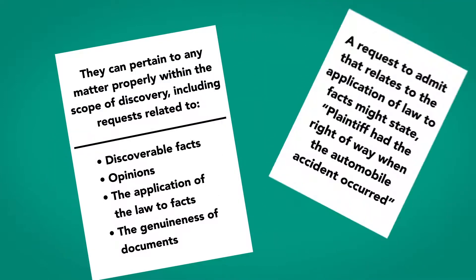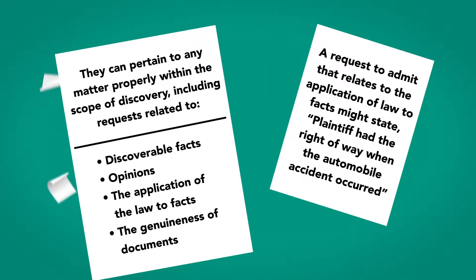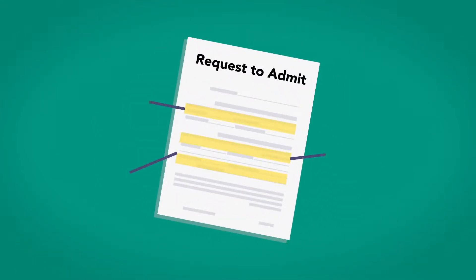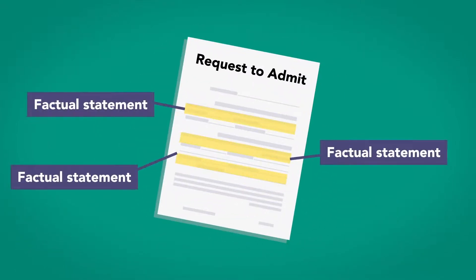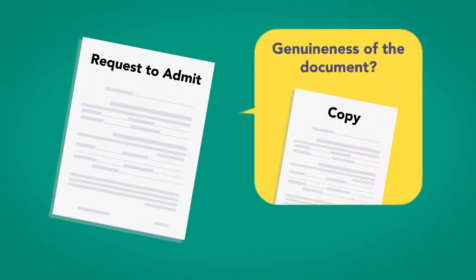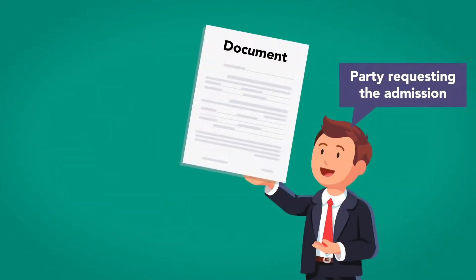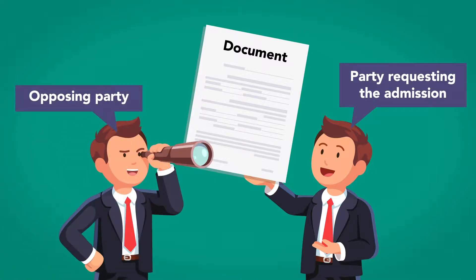For example, a request to admit something that relates to the application of law to facts might state: Plaintiff had the right of way when the automobile accident occurred. For clarity, each factual statement in the request to admit must be stated separately. If the request asks about the genuineness of a document, then the request must either include a copy of the document or the party requesting the admission must make the document available for the opposing party's inspection and copying.